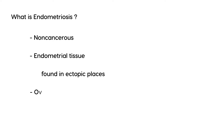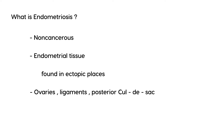When endometrial tissue is found in ectopic places, it can be found in the ovaries, in the ligaments of the pelvic area, and in the posterior cul-de-sac, among many other locations. It's helpful to get a visual picture of what exactly is happening before we continue.